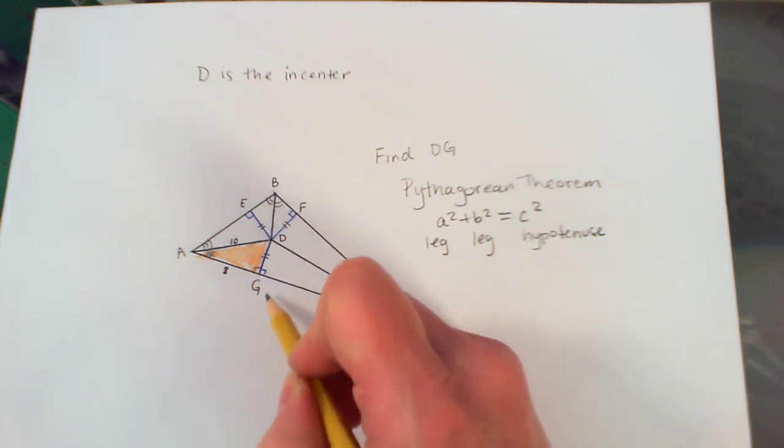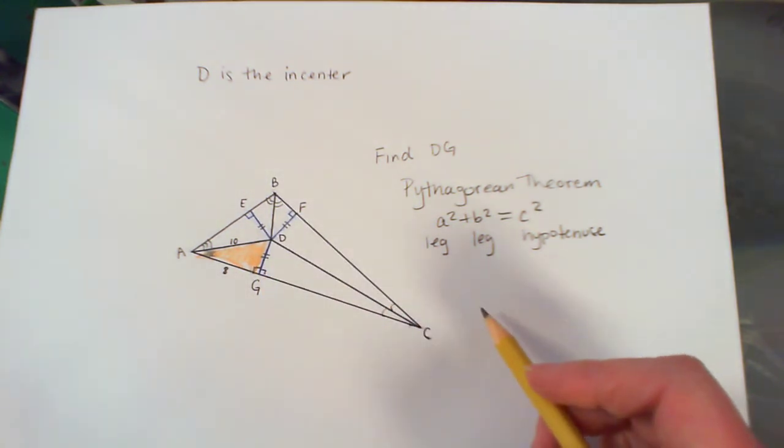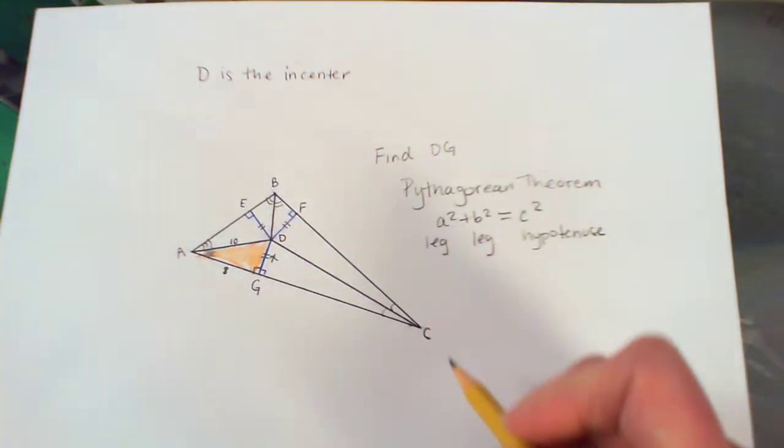I could add another right angle here because all perpendicular lines make four right angles, so there's a right angle right here. So in order to solve for the missing side, I'm going to put a little X on DG, because I don't know that side.